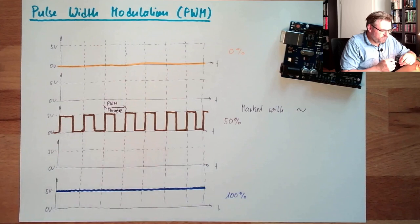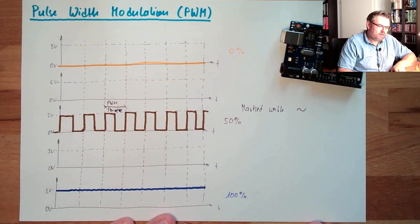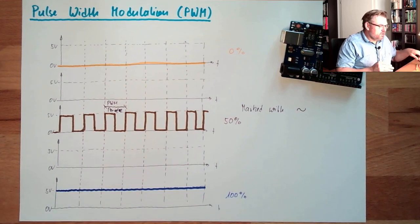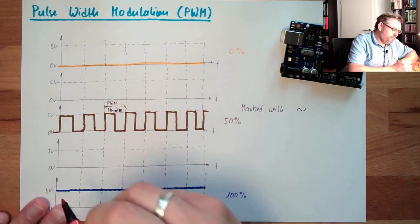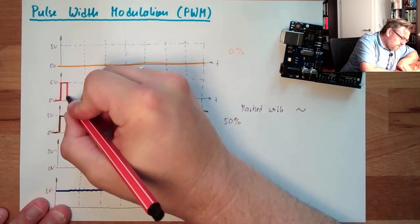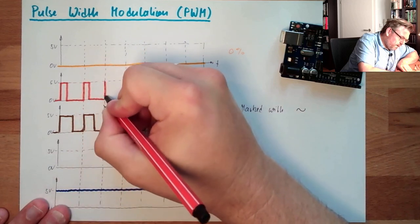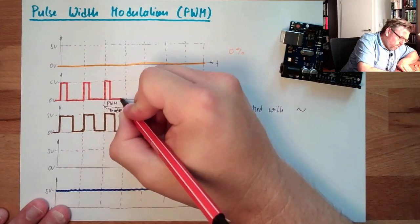And within this period, we can change how long the pulse will be there. So for instance, if we have 25%, then this will stay on only 25%. There are shorter pulses then, and longer pauses.